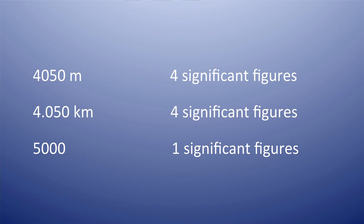Rule five: all zeros to the right of the last non-zero digit are significant if they come from some measurement. For example, if the distance between two objects is 4050 meter, then it contains four significant figures. Because 4050 meter is a measurement with a unit, hence all the zeros are significant, and the non-zero digits are themselves significant.